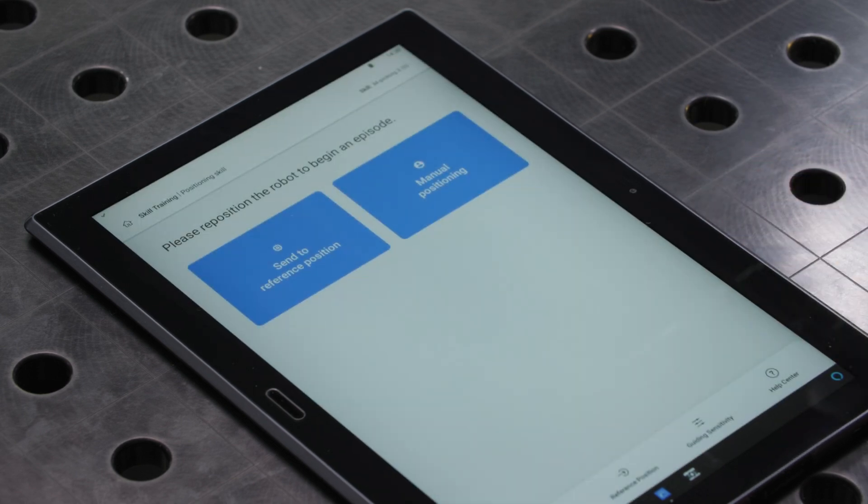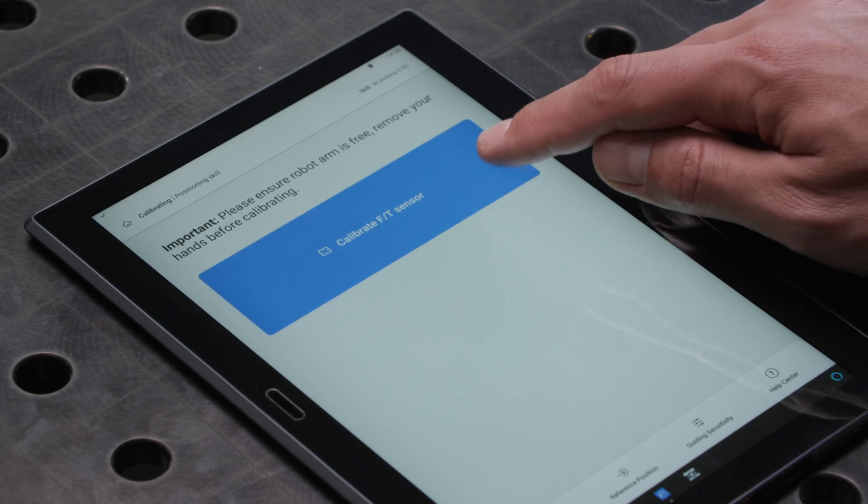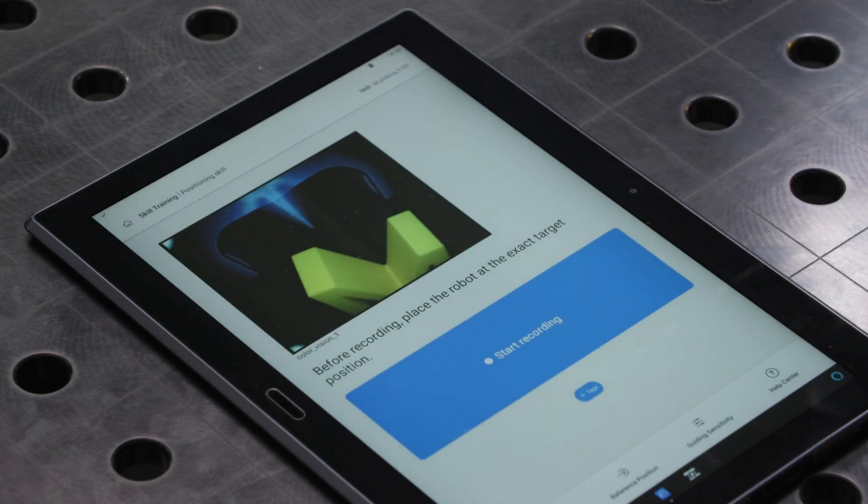We will be asked to reposition the robot to begin an episode. We can go with manual positioning. Calibrate the force torque sensor. As you do this, be sure your hands aren't touching the robot.